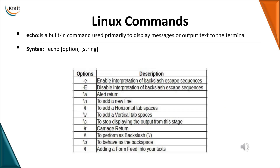Having seen the architecture and features of Linux, we now look at Linux commands. The first command is echo. The echo command is used for printing text onto your monitor. The syntax is: echo [option] [string]. The option is optional — you may include it or not. To enable backslash character interpretation, use hyphen small e (-e). To disable backslash characters, use hyphen capital E (-E).